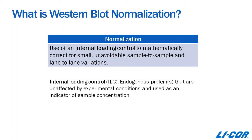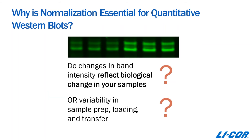From a quantitative Western blot standpoint, when you see changes in band intensity, you really want to know if those changes represent differences in your target protein expression levels, or if they're potentially due to variability in the sample prep, the loading, the transfer, and so on. In this small clip of blot, all of the samples are exactly the same, so the differences in band intensity in the first three lanes aren't due to biological change — they're actually due to errors in loading itself. Normalization allows you to correct for those unavoidable errors that are always going to be part of the Western blotting process.